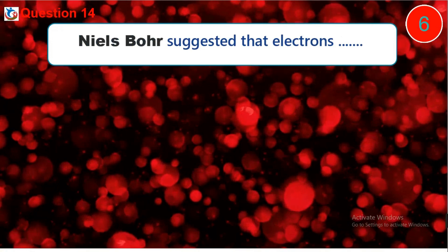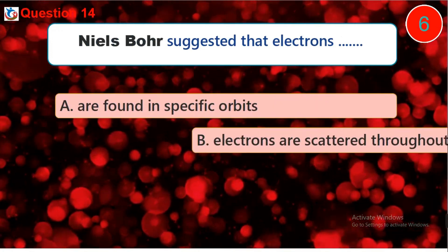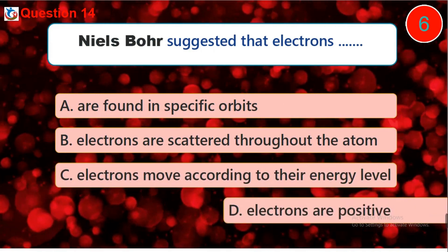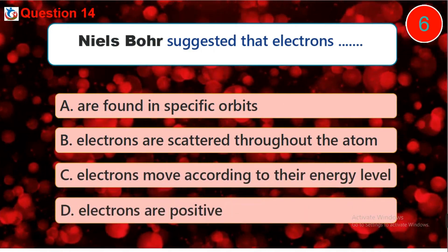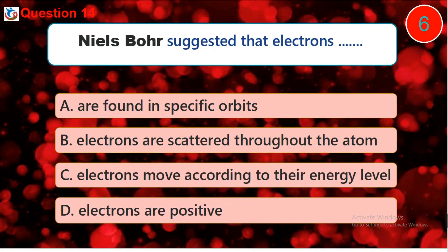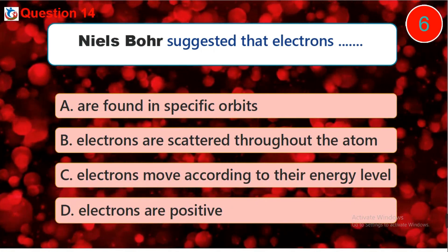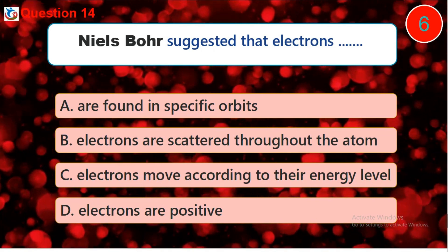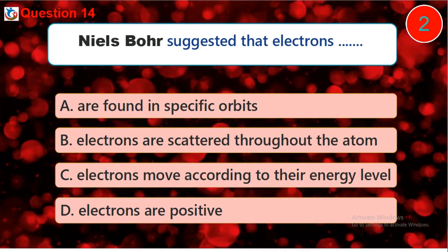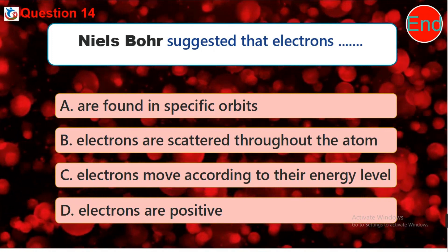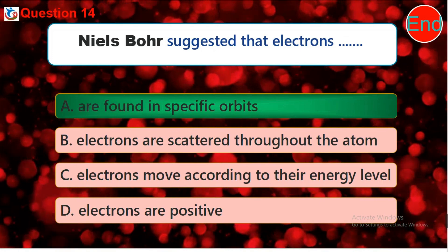Question 14. Niels Bohr suggested that electrons blank. A. Are found in specific orbits. B. Electrons are scattered throughout the atom. C. Electrons move according to their energy level. D. Electrons are positive.